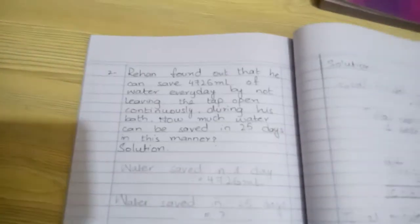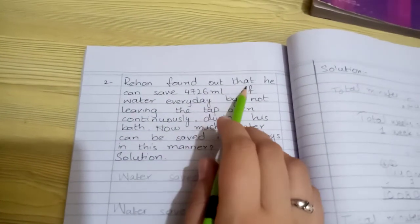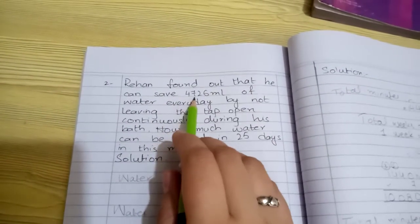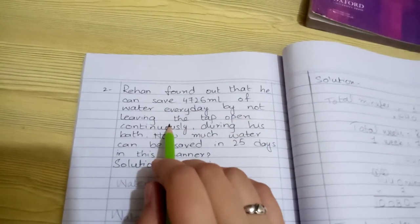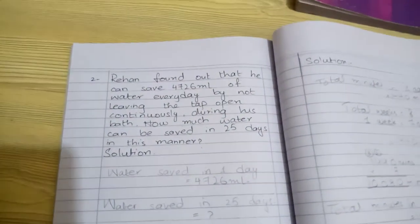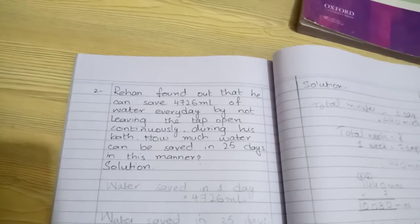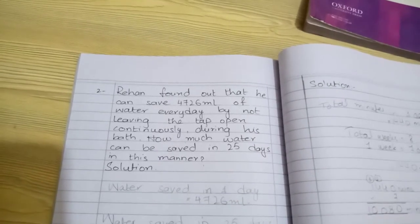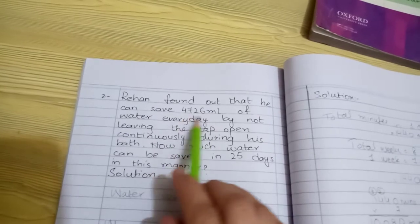Part 2: Rehan found out that he can save 4,726 milliliters of water every day by not leaving the tap open continuously. If he uses water carefully instead of leaving the tap open, he can save this much water during his bath.